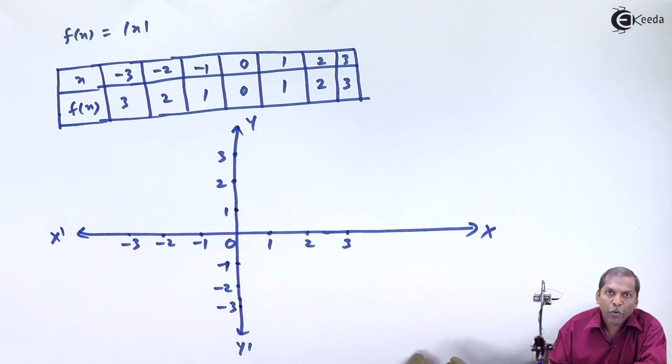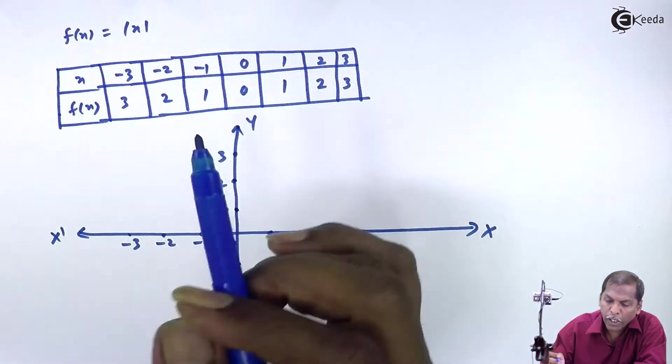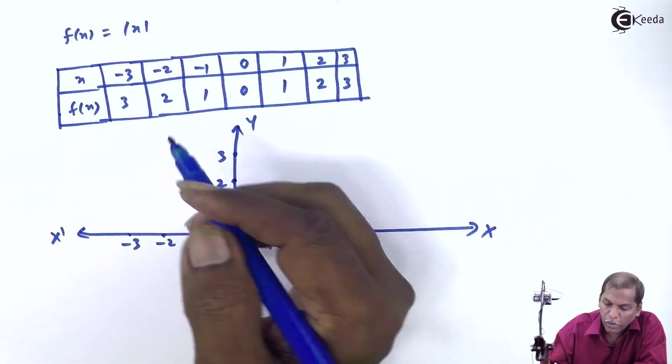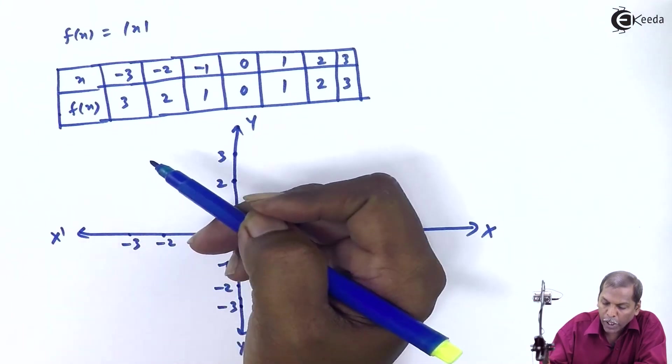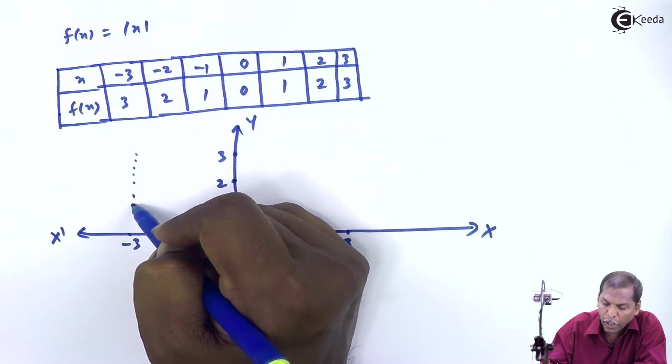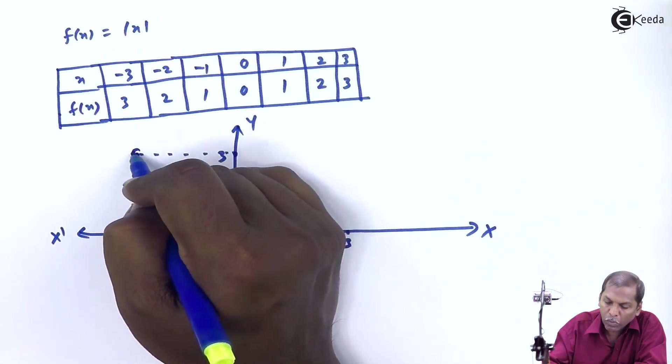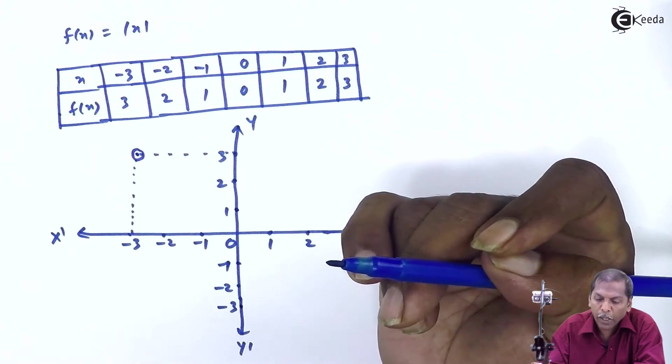Now we plot the points here. The first point is minus 3, 3 in the second quadrant. So approximately, this is the point minus 3, plus 3.